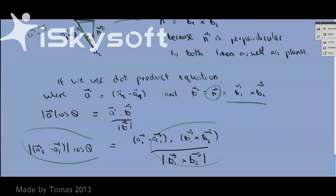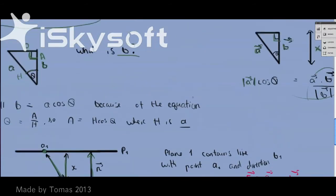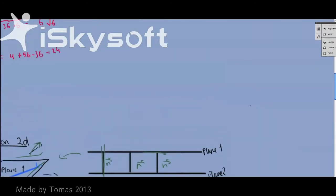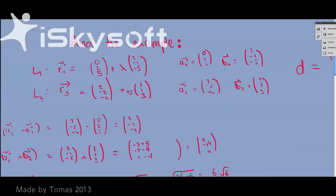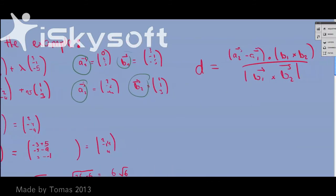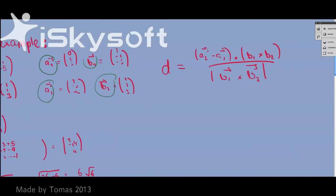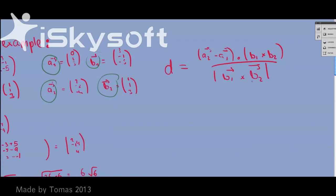Just view this video again if you don't get it, and now for the worked example, right here. So here's the example, so line 1 is that, line 2 is that, so we find what's A₁, what's B₁, what's A₂, what's B₂, and then we know this equation: d is (A₂ - A₁) · (B₁ × B₂) all over |B₁ × B₂|, modulus length of that.